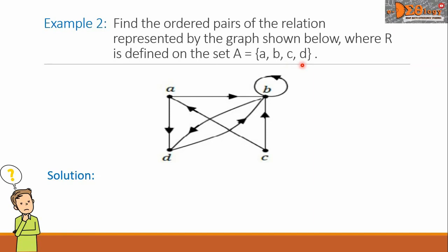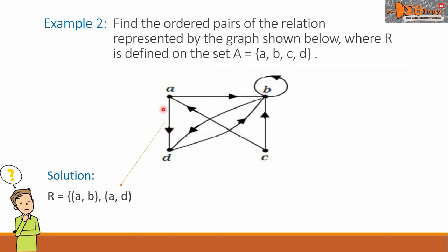For our solution, let's begin with point A. Let us identify all arrows that go out from point A to another point. The first arrow goes from point A to point B, so we write AB. Another arrow goes from A to D, so we write AD. There are no more arrows going out from A.